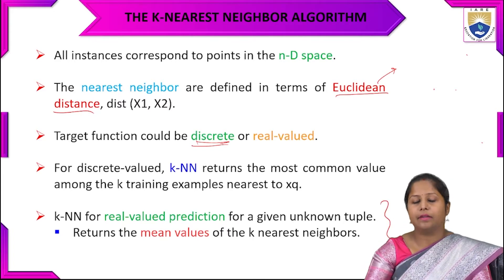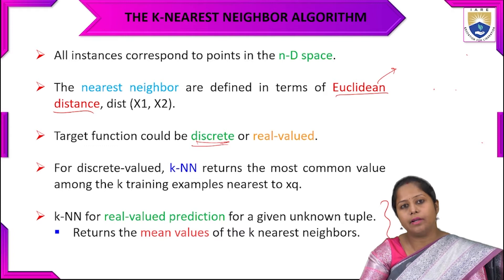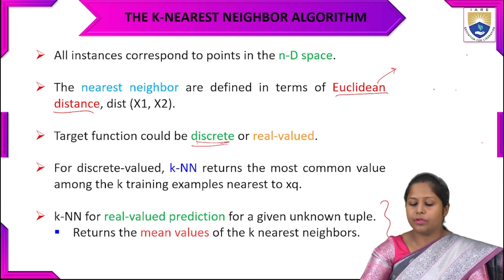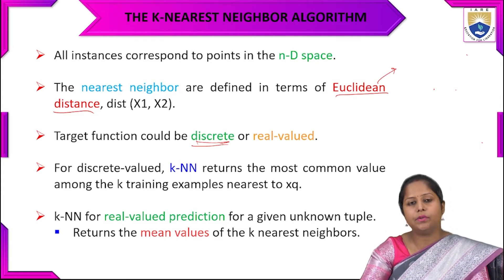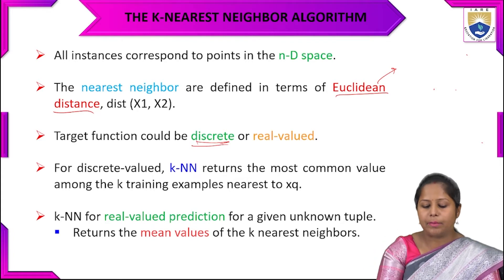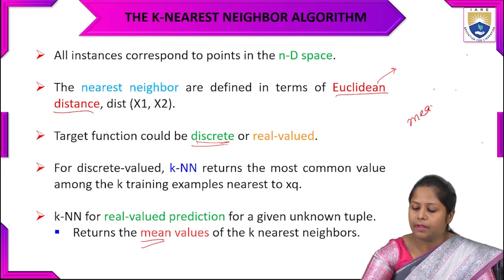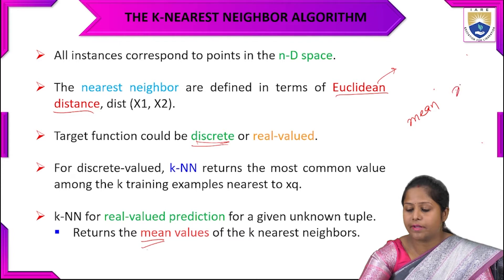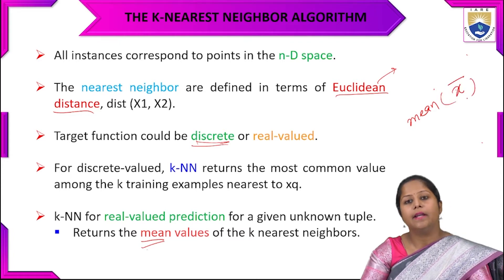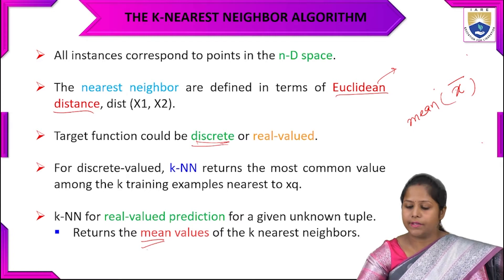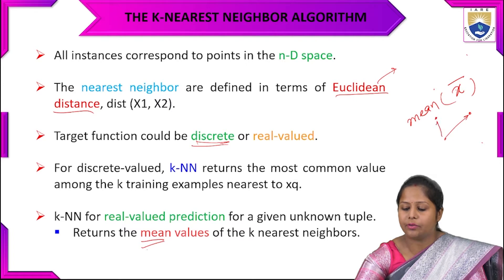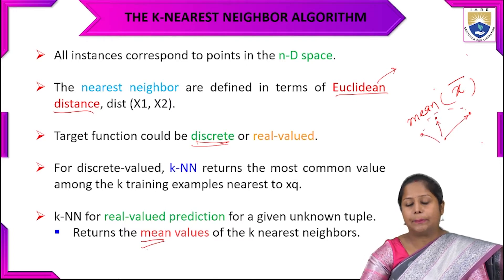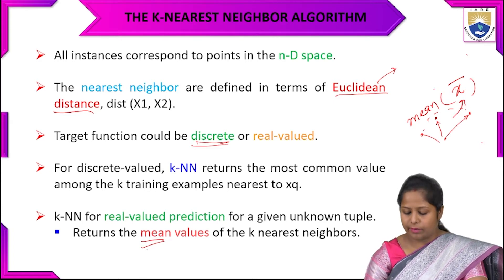For real-valued attributes, for a given unknown tuple, the algorithm returns the mean value of the K nearest neighbors — the mean of all the nearby points. This gives us the mean value for each point for real-valued attributes.